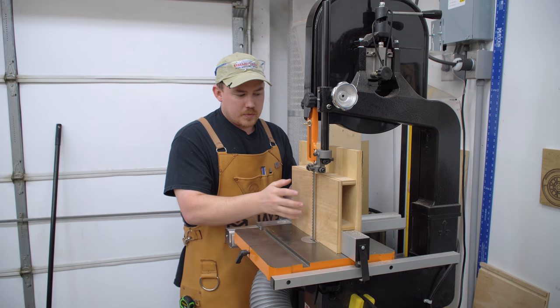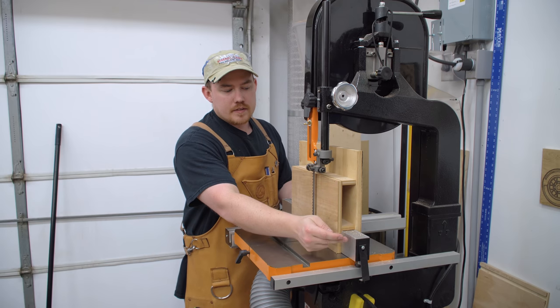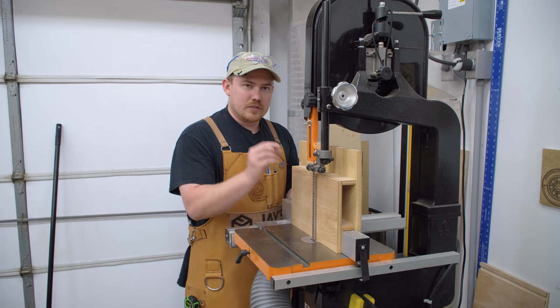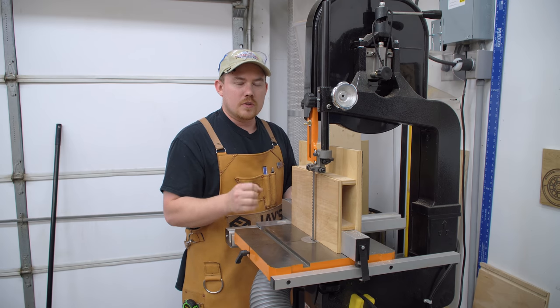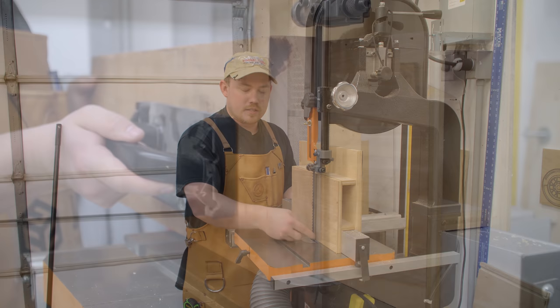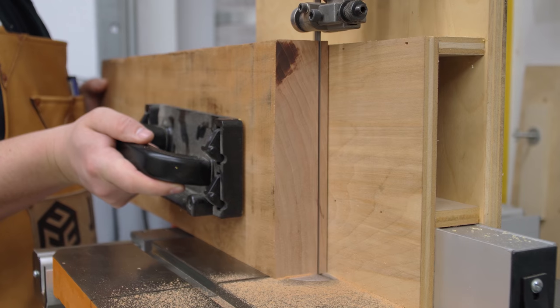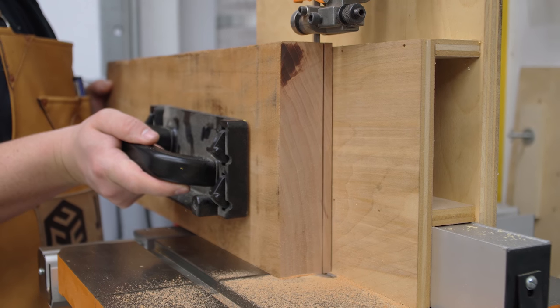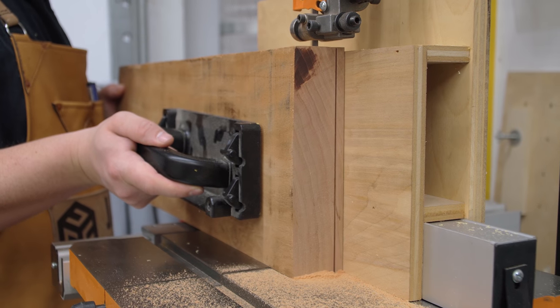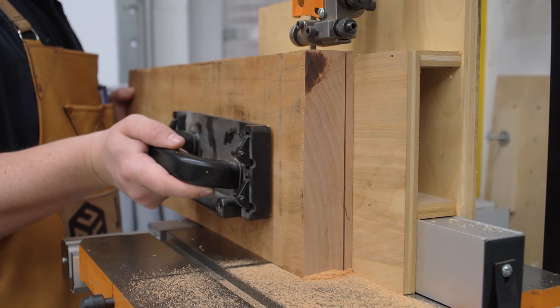I have my bandsaw set up with my resaw fence, and this is just a very simple homemade solution that slips over the stock fence on the saw. The goal here is to get a panel that is just a little bit more than one quarter of an inch, so I set my distance both on top and bottom. Make sure you check the distance from the blade to the fence on the bottom as well as the top to make sure you have your table angle properly set. I have the distance set to be about five sixteenths of an inch, so we can resaw all our pieces and then plane them down to an absolute perfect fit.